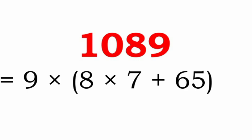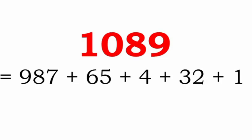This is another representation of 1089. In this representation, all the digits from 1 to 9 are used and we can write 1089 as 987 plus 65 plus 4 plus 32 plus 1. It uses only the addition symbol.